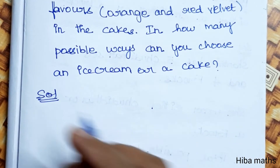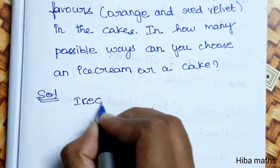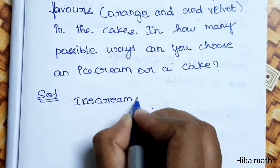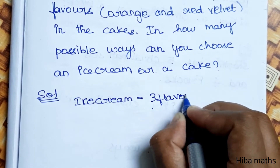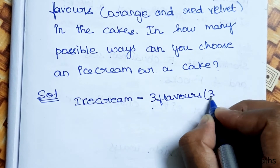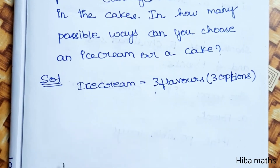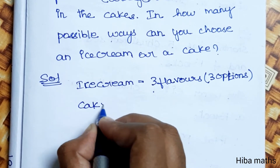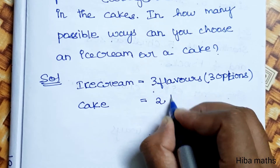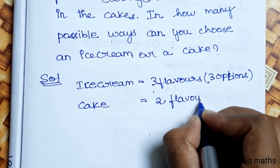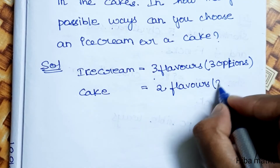So how do we get the addition statement? Ice cream has 3 flavours, so there are 3 options. Cake has 2 flavours — orange and red velvet — so there are 2 options.